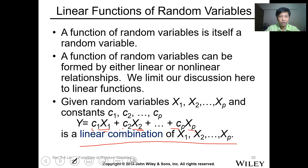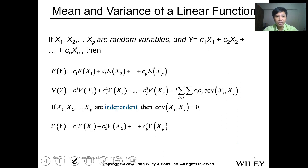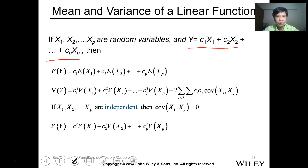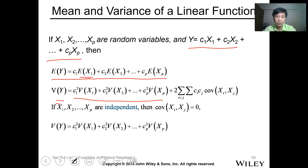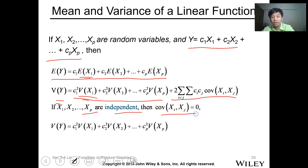This is a linear combination of x1 and x2. For the mean and variance of a linear function: if y is equal to a linear expression of x variables, then the expected value of y equals the sum of the constant ci times the expected value of xi. The variance follows as the sum of ci squared times the variance of xi, plus 2 times the summation of the product of the covariances. If x1 through xp are independent, then the covariance terms equal zero and that term drops out.